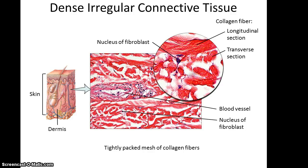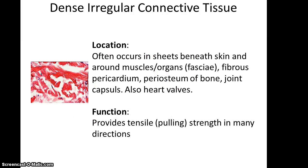Dense irregular connective tissue is similar in having bundles of collagen fiber; however, these bundles can go in many directions — lengthwise, back and forth, diagonally, whatever is necessary. It often occurs in sheets beneath the skin and around muscles and organs, often referred to as fascia. It is found in the fibrous pericardium surrounding the heart, the periosteum of bone, joint capsules, and heart valves. Its function is to provide tensile strength in many directions — you can pull and stretch skin in many ways and it returns to its original form.